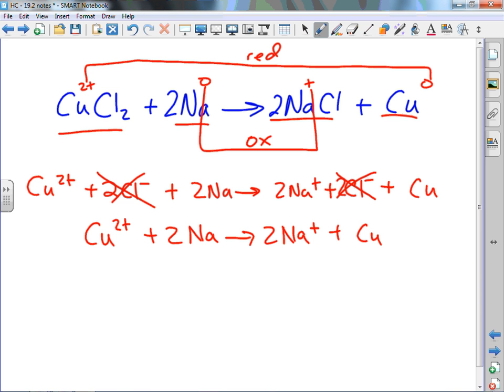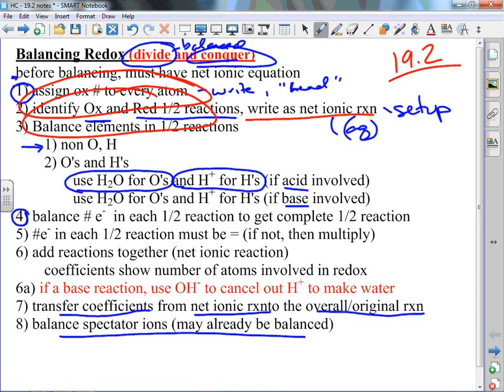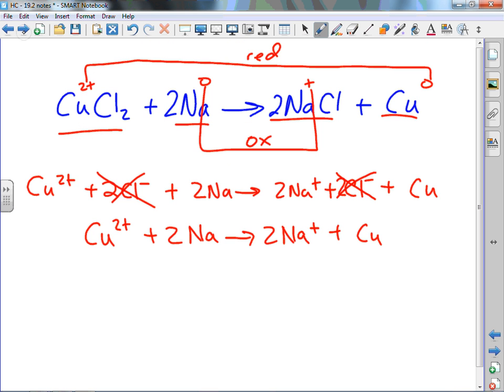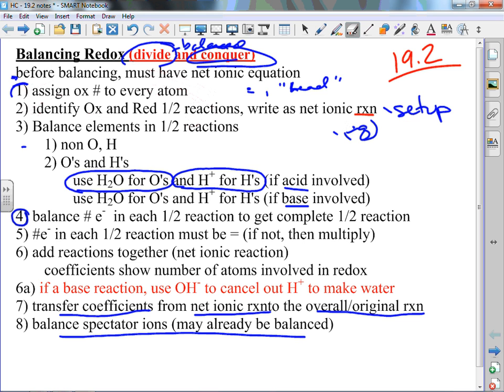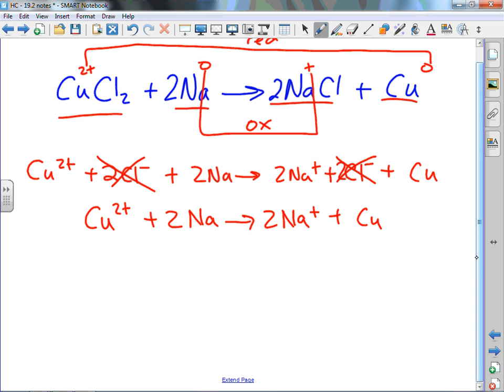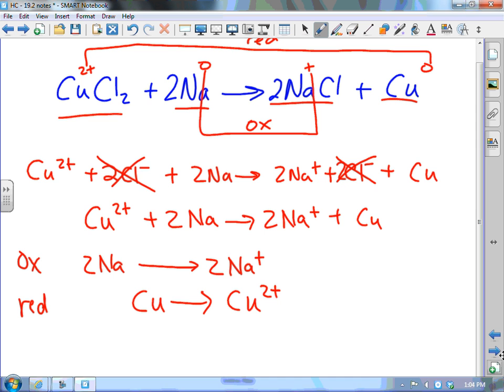If we look here, what's net? The chlorines are spectators. We had a copper two-plus and two sodiums, and electrons moved so that now sodium is the positive ion and copper is the zero. So now we go through steps. We've got to do our half-reactions. Our oxidation half-reaction is two sodium atoms changing into two Na pluses. And then our reduction reaction is a copper two-plus changing into a copper atom.